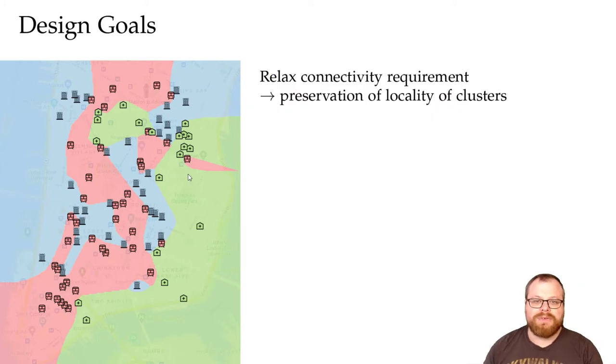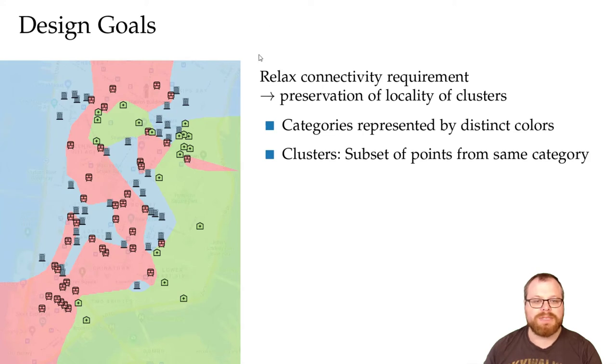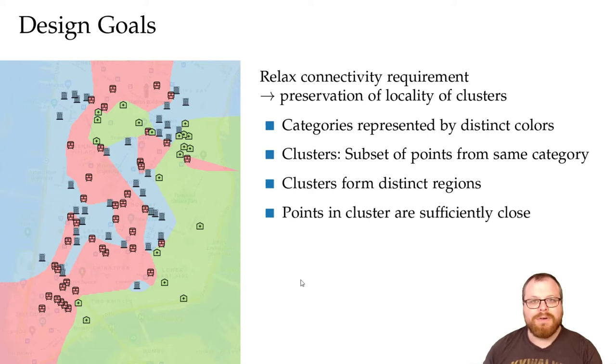The design goals of our approach are the following. We want the categories to be represented by distinct colors. We want to form clusters, which are subsets of points from the same category, and these clusters should form distinct regions in the plane. For these clusters, we want that the points inside a cluster are sufficiently close, and we want to have a small number of clusters per category.